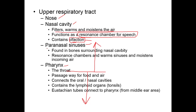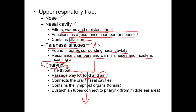We are able to smell because of our olfactory nerve. The paranasal sinuses are found in the bones surrounding the nasal cavity; they also function as a resonant chamber and help warm and moisten incoming air. The pharynx, known in lay terms as the throat, serves as a passageway for both food and air — food goes down the esophagus and air goes down the trachea. You also find your tonsils and eustachian tubes here.